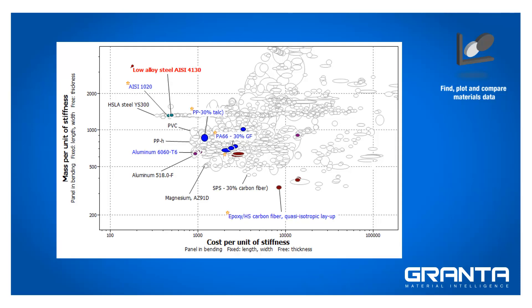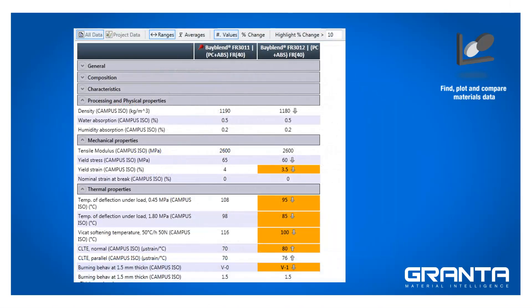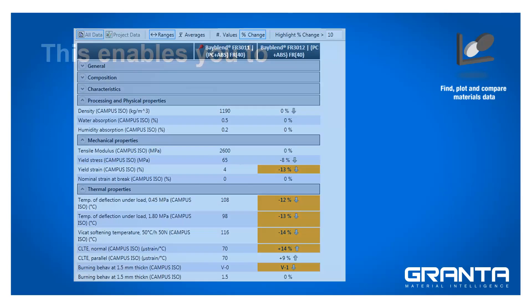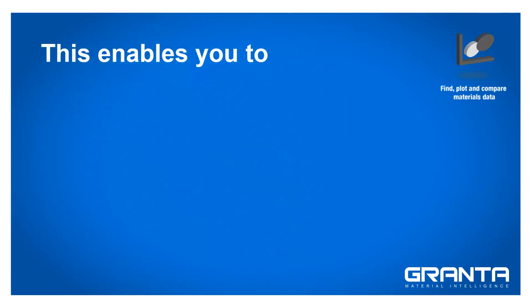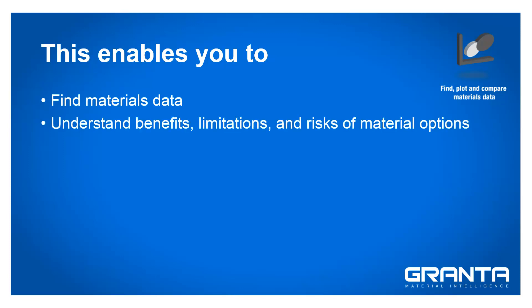Once I've identified some likely candidate materials for an application, I can create comparison tables, listing all properties and clearly highlighting significant differences between candidates. This unique combination of access to quality materials data and highly visual search and comparison tools enables you to readily find data on materials of interest, understand the benefits, limitations and risks associated with different options, and communicate the reasoning behind your materials recommendations to colleagues and project sponsors.